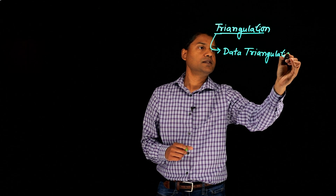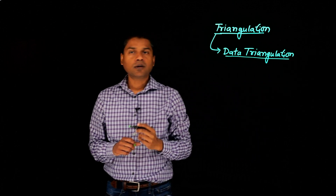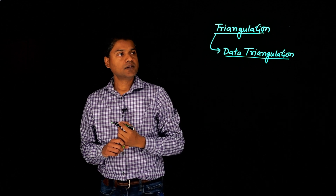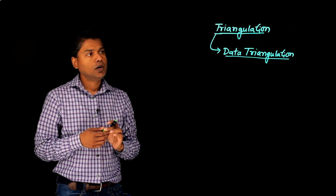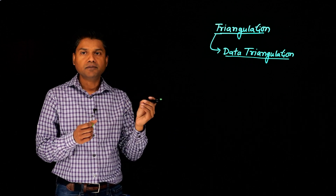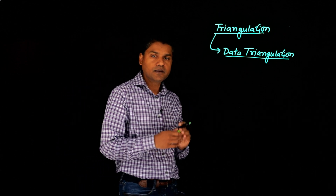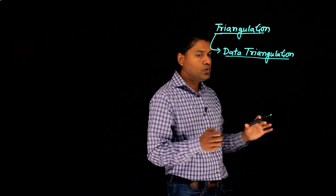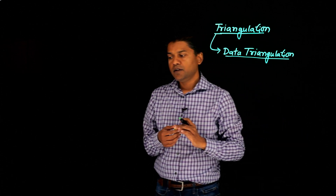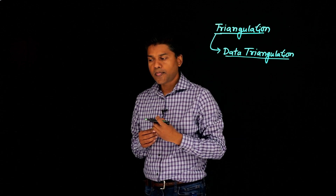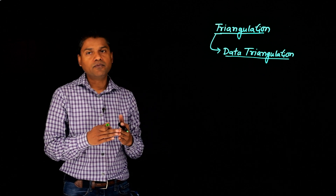What is data triangulation? In data triangulation, a qualitative researcher uses multiple sources of data to analyze a phenomenon. So rather than using one source of data, you try to collect data from multiple sources. For example, if I'm doing interviews to understand a phenomenon, interview data is one type of data.